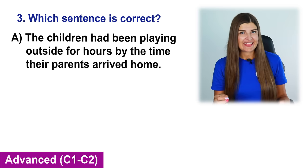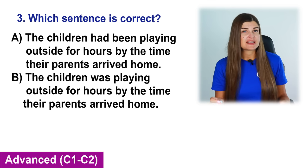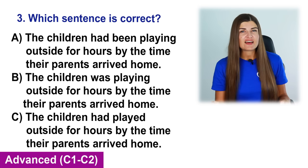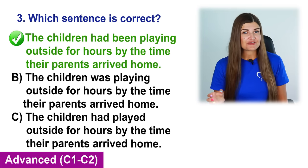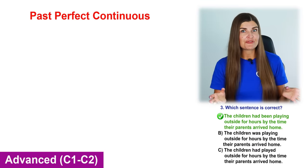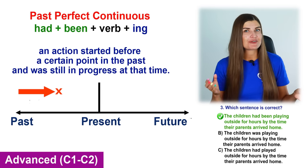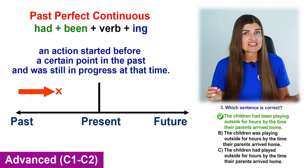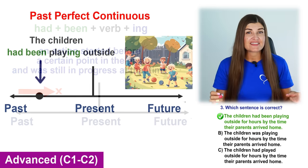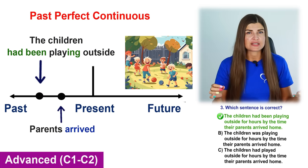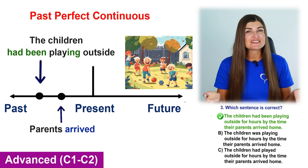Which sentence is correct? A. The children had been playing outside for hours by the time their parents arrived home. B. The children was playing outside for hours by the time their parents arrived home. C. The children had played outside for hours by the time their parents arrived home. Had been playing is the past perfect continuous form, which is formed with had been plus present participle. This tense is used to describe an action that started before a certain point in the past and was still in process at the time. The action of playing outside started before the arrival of the parents and was still ongoing, so the past perfect continuous form is appropriate.